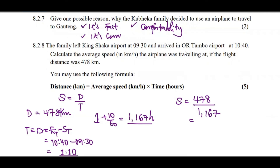So the speed of the airplane works out from 478 divided by 1.167, giving us the average speed in kilometers per hour.